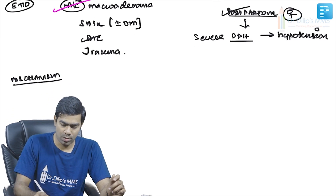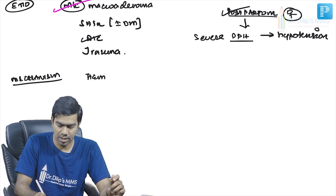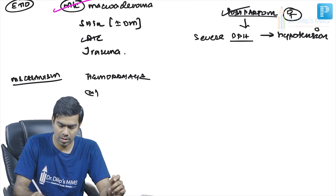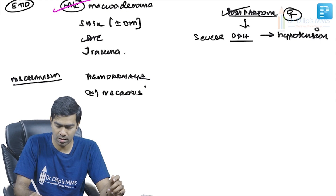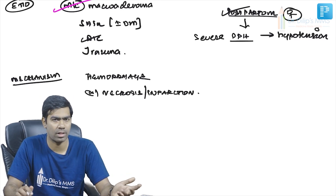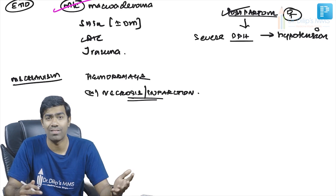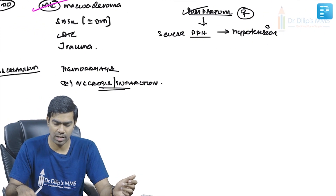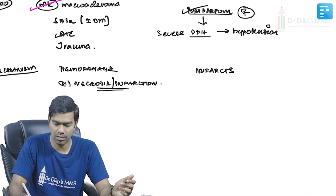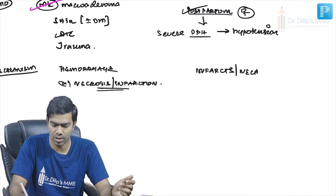Regarding mechanism: in apoplexy, there is either hemorrhage into the pituitary or necrosis due to infarction of the pituitary. Sheehan syndrome, on the other hand, is only due to infarction or necrosis of the pituitary — not hemorrhage — and it occurs only in the postpartum period.